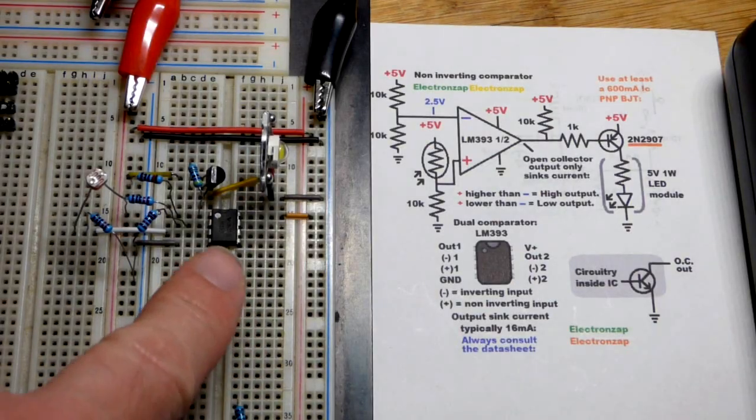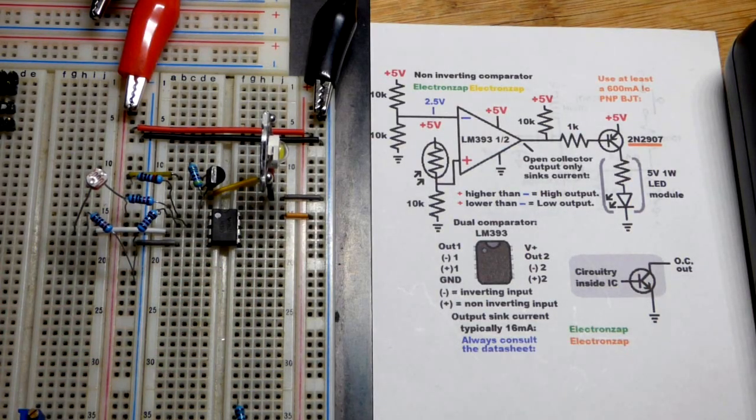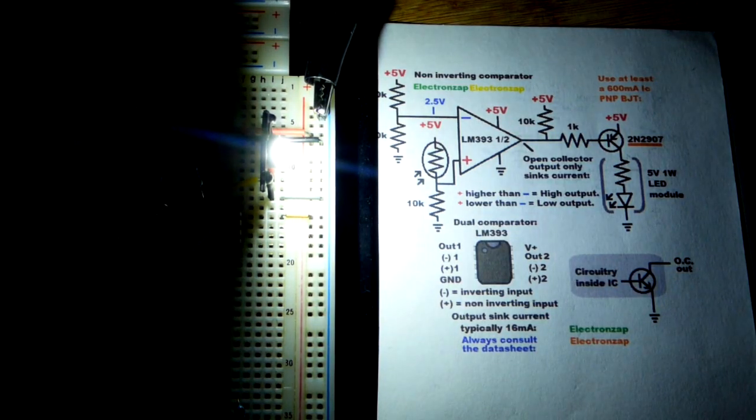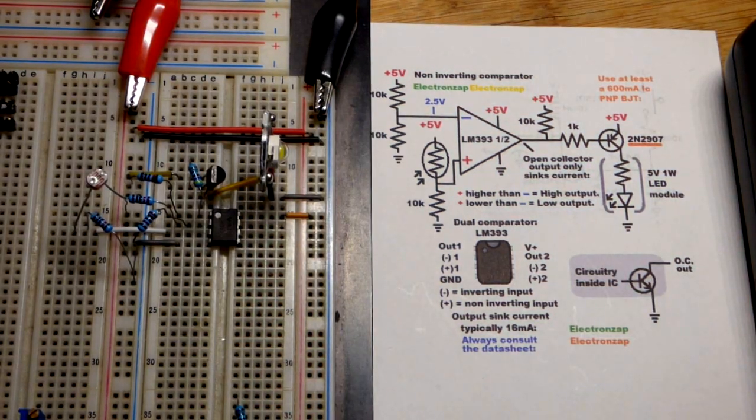In this video we have an LM393 comparator integrated circuit. We're just using one out of the two, wired as a nightlight.